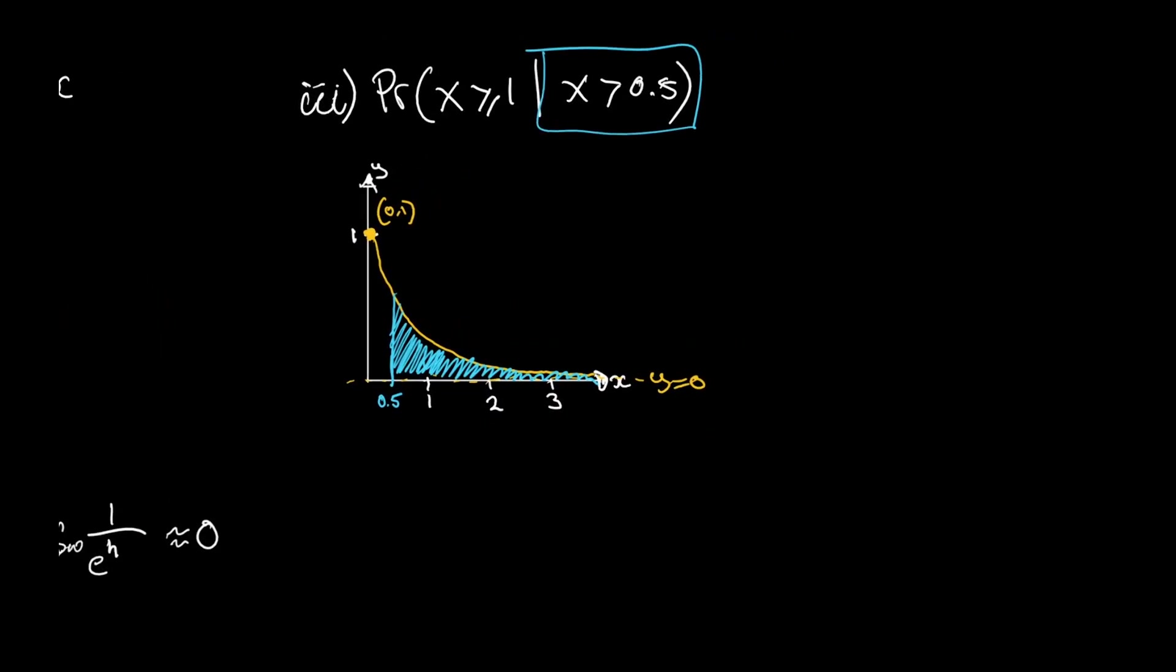We've got to make sure that x is greater than or equal to 1. So we're selecting the green area here. The probability, if we're going to write this in integral notation, I'd say it's going to be the integral from 1 to infinity of the function, because that is the green area, divided by the integral from 0.5 to infinity, because that is the blue area. So we need to evaluate these two integrals separately.